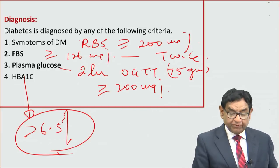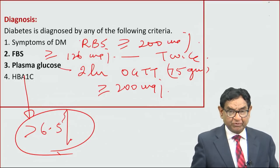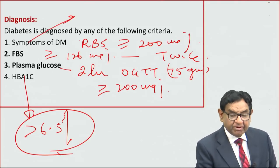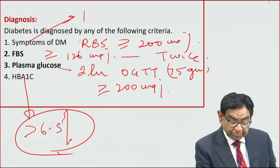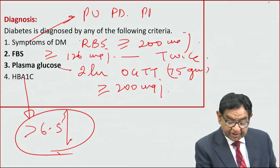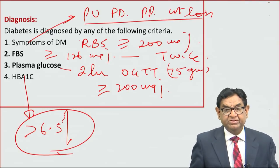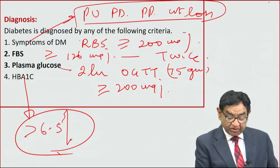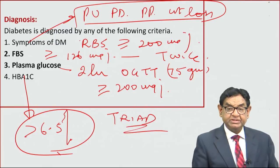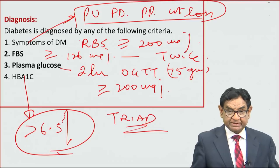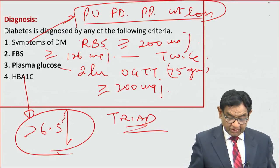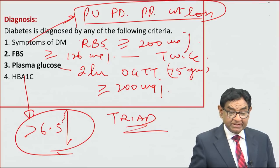Now I'm going to ask a simple question — after listening, stop the video and write down the answer. The symptoms of diabetes are polyuria, polydipsia, polyphagia, and weight loss — four classical features seen in a case of diabetes. The question is: out of these four, which is NOT a part of the classical triad of diabetic symptoms?